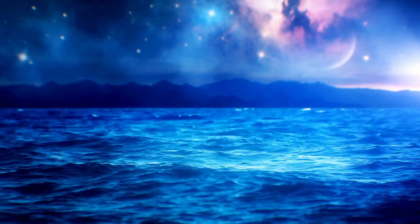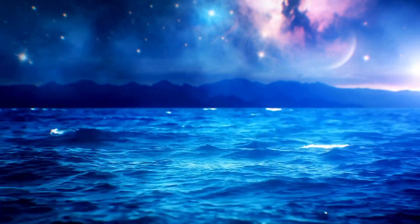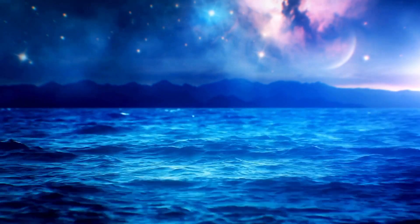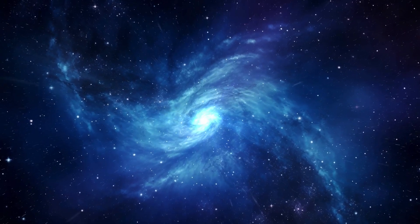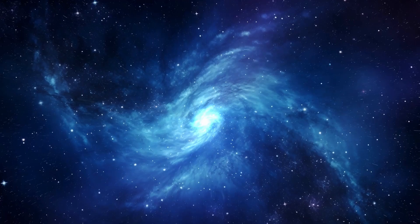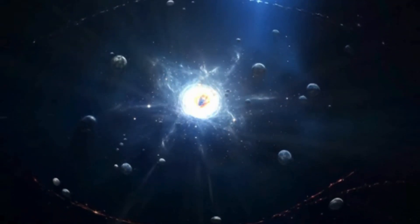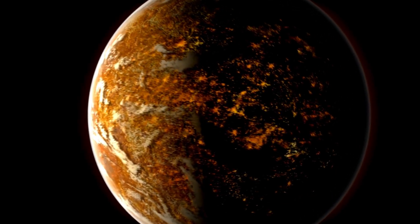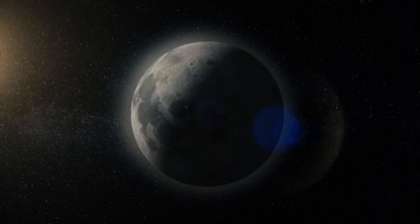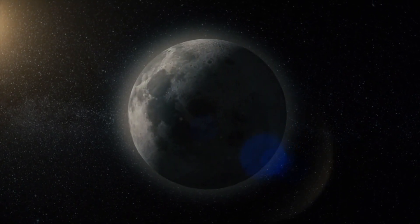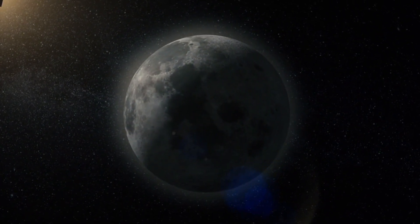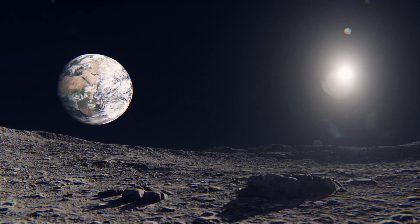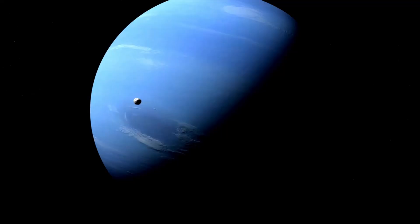At the beginning of the universe, all matter, energy, and the building blocks of the universe were packed into a single point of unimaginable density, known as a singularity. This singularity represents the starting point of everything, where the laws of physics begin to break down. The nature of the singularity is rooted in Albert Einstein's theory of general relativity. The density of matter reached an infinitely high value, creating conditions that we cannot fully comprehend. The temperature at this time was extreme, far exceeding anything observable in the universe today. It is within this singularity that the seeds of the universe were planted, with all the mass and energy needed to create everything we see around us today.